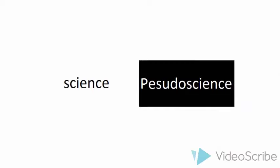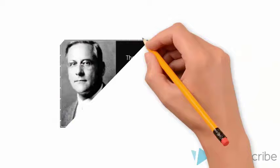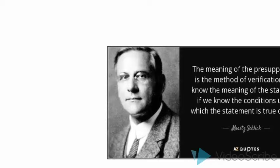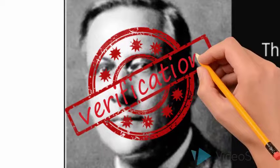After the failure of the old school, the modern school of demarcation started distinguishing science from pseudoscience depending on the verification method. We believe that any statement would only be scientific if it was verified.